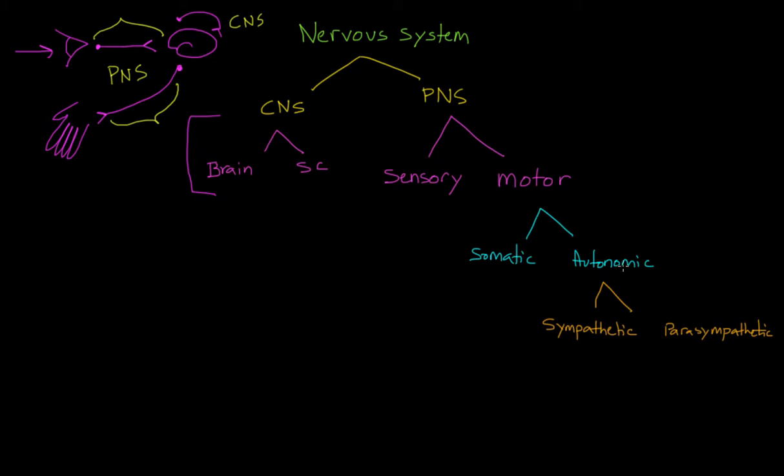The two portions of the autonomic nervous system are the sympathetic and parasympathetic divisions. One thing I didn't mention earlier is that these two systems work in opposition to one another. The sympathetic nervous system encourages the expenditure of energy,